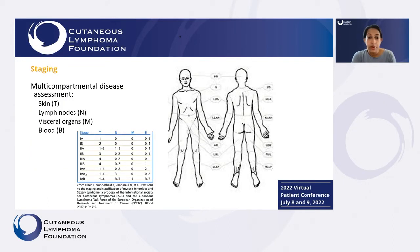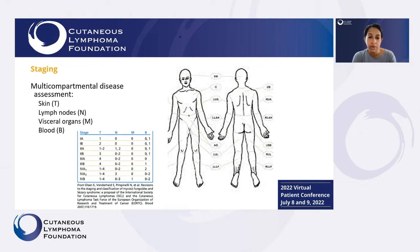Staging also involves assessments of other areas that may be involved by the lymphoma. Most commonly, the lymphoma does only involve the skin, but we also look at whether or not lymph nodes are involved, whether or not organs are involved, and whether or not the blood is involved. The overall staging system looks at all of these different compartments, including examining lymph nodes in various areas to see if any are affected or enlarged.